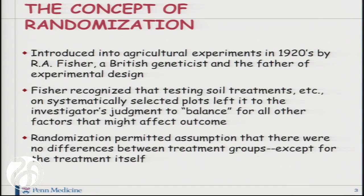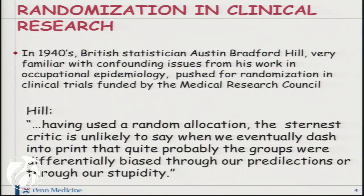The concept of randomization, more recently, was introduced into agricultural experiments in the 1920s by R.A. Fisher, who recognized that testing soil treatments and other approaches on systematically selected plots, no matter how hard people tried to make everything the same, left it to the investigator's judgment to balance for all the factors — and that randomization would permit the assumption that there were no differences between treatment groups except for the treatment itself.